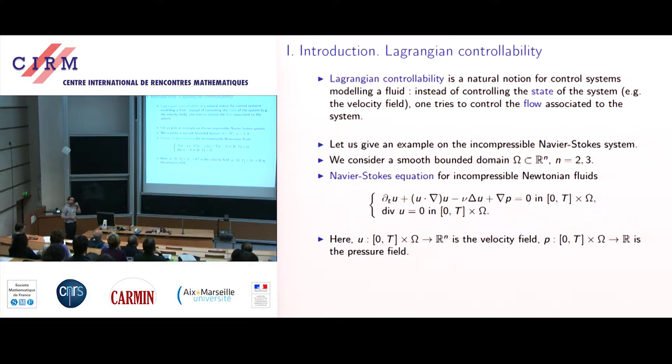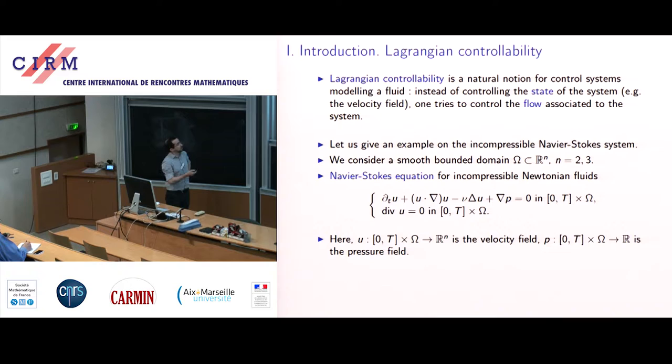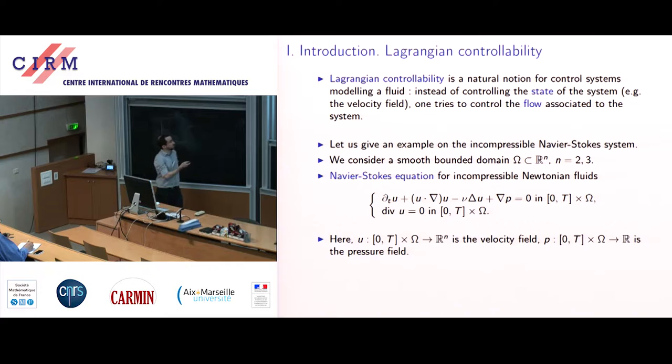To give a precise meaning of Lagrangian controllability, I will take, for instance, an incompressible Navier-Stokes equation. What I'm going to discuss afterwards will concern a simpler model, but for now let's say we have Navier-Stokes. You are in a domain Omega in R² or R³. U is the velocity field and P is the pressure field. You have the conservation of momentum and the incompressibility condition — a very classical system.